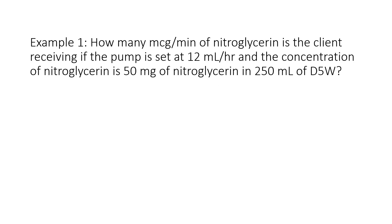Example 1. How many micrograms per minute of nitroglycerin is the client receiving if the pump is set at 12 milliliters per hour and the concentration of nitroglycerin is 50 milligrams of nitroglycerin in 250 milliliters of D5W? Since the problem wants micrograms per minute, we want to locate micrograms in the problem. Unfortunately, we don't have it — this is what makes these calculations more challenging. Since I do have a conversion with time in the problem, I want to start there. I was given that the pump is set at 12 milliliters per hour. When we set this up using dimensional analysis, I want 12 milliliters on top and time on the bottom, which is one hour.